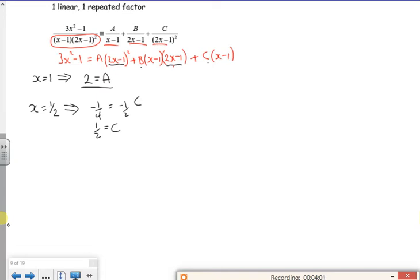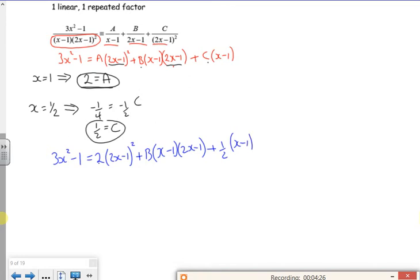So I push it up a little bit. Right, so my equation now, if I put these two numbers back into it, my equation now looks like 3x squared minus 1 is 2 lots of 2x minus 1 squared plus B lots of x minus 1, 2x minus 1, plus C, so plus a half lots of x minus 1. There. So I've used up the two numbers that were easy to use.